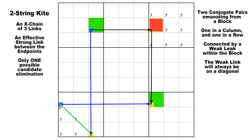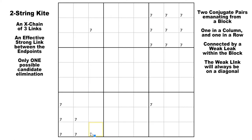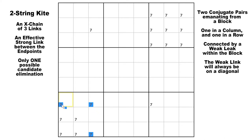They can never be in the same row or the same column, otherwise the two strong links would be negated and the pattern would not work. If this seven down here in row nine were up in row seven instead, then there would be three sevens in row seven and that would not be a strong link. So the two weakly-linked candidates will always be on a diagonal in a two-string kite.